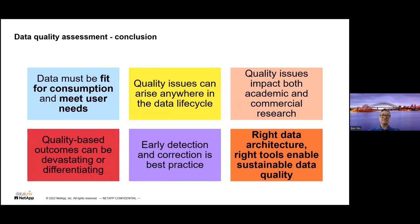In conclusion, data has to be fit for consumption to meet user needs, and quality issues can arise anywhere in the life cycle — they impact both academic and commercial research. The outcomes can be devastating or differentiating: good quality data managed efficiently can result in a reliable research paper or a commercially differentiating outcome, while poor data quality can impact people's lives significantly. The best practice is early detection and correction, and that can only be done with the right data architecture and the right tools to ensure it's sustainable.